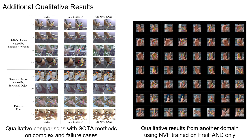Compared with state-of-the-art methods on complex and failure cases, NVF has shown its capability to recover robust 3D hand pose when facing severe self-occlusion, occlusion caused by interacted objects, and extreme poses. NVF further shows its ability to generate solid results when testing on images from another domain. Thank you for watching.